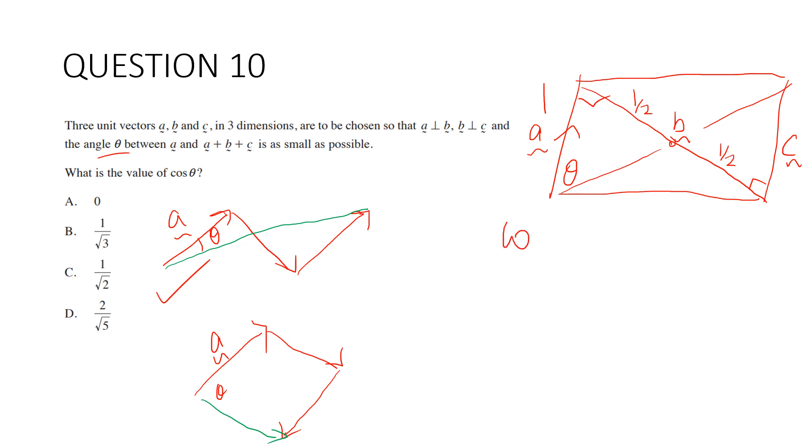cos θ, using right angle trig, must be adjacent over hypotenuse. Using Pythagoras in this triangle, h squared equals one squared plus a half all squared, which is 5 over 4. h equals root 5 on 2 (it has to be positive). Therefore, cos θ equals 2 on root 5. The answer is D.